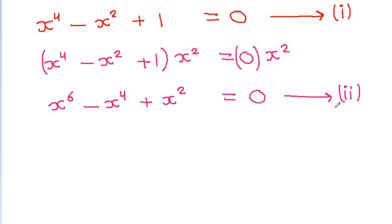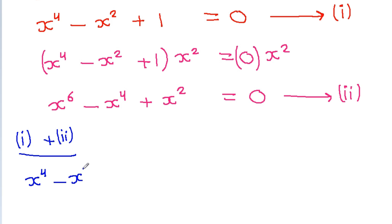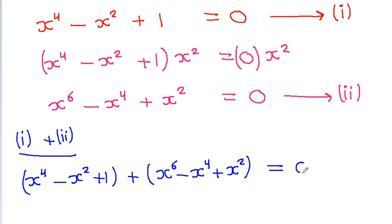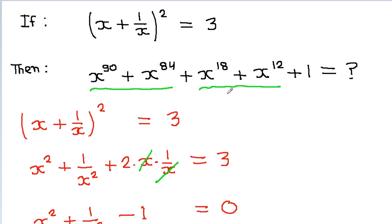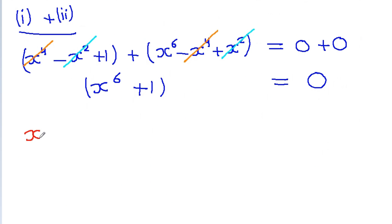Adding Equation 1 and Equation 2: Equation 1 is x⁴ - x² + 1 = 0 and Equation 2 is x⁶ - x⁴ + x² = 0. The x⁴ terms cancel, and the x² terms cancel, leaving x⁶ + 1 = 0.